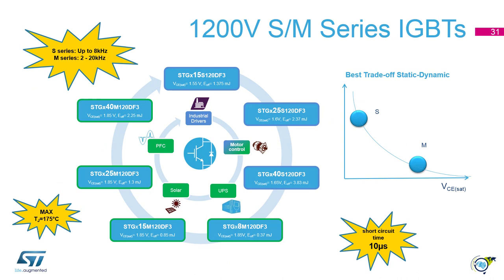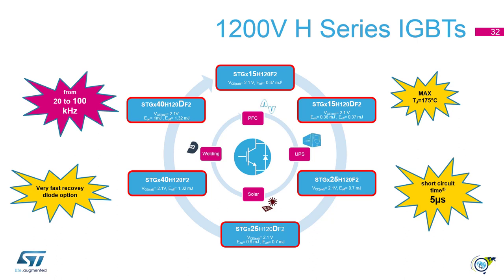Here are some product examples for the 1200 V S and M series. The table on the right shows the trade-off between dynamic and static losses for both IGBT series. The S series is optimized for operation up to 8 kHz, while the M series is up to 20 kHz. Both provide up to 10 µs short circuit withstand time. The 1200 V H series features a much higher switching frequency of 20 to 100 kHz, making them perfect for high dynamic applications with high output frequencies.